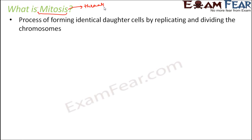Mitosis is a process of forming identical daughter cells by replicating and dividing the chromosomes. By the end of mitosis, the daughter cells produced are exactly identical to each other and identical to their parent cells as well. There are two concepts behind mitosis: one is replication and the second is division.